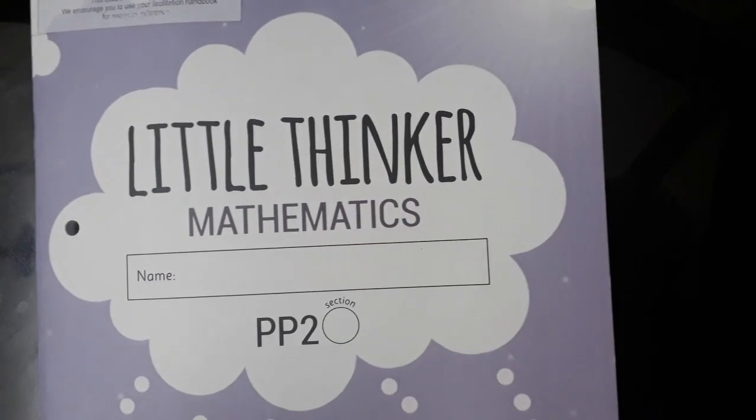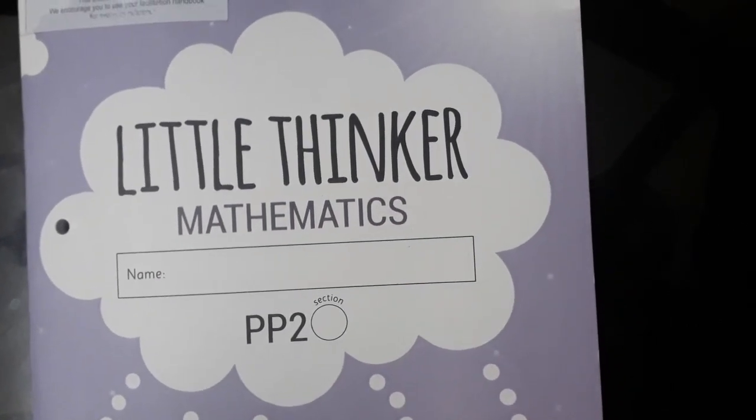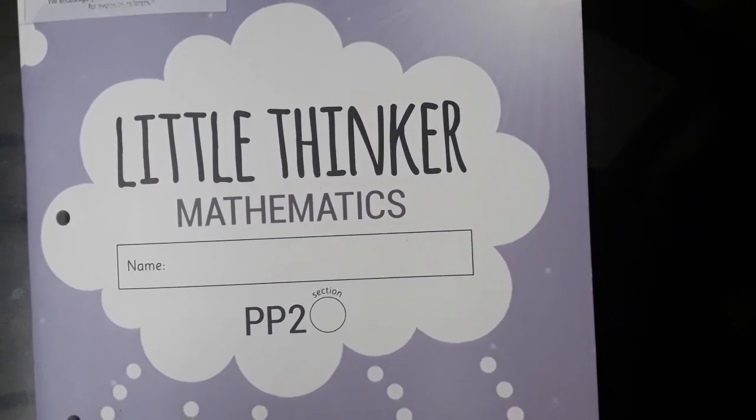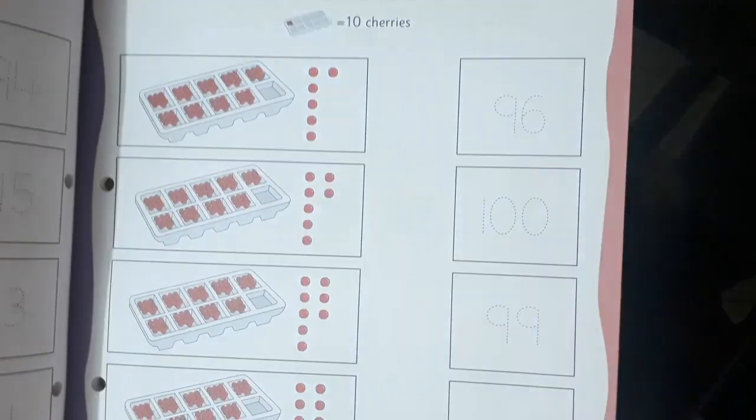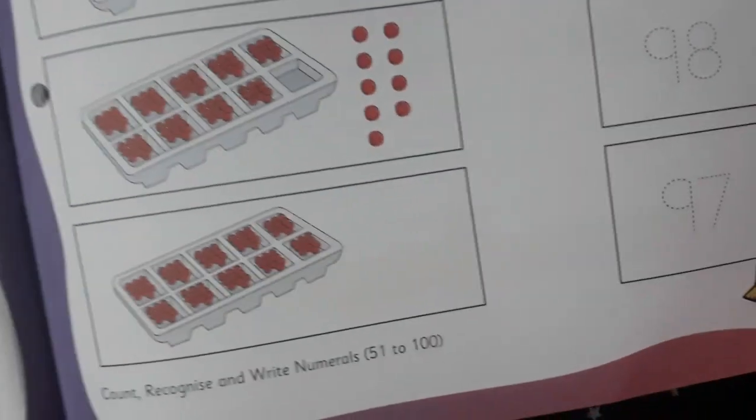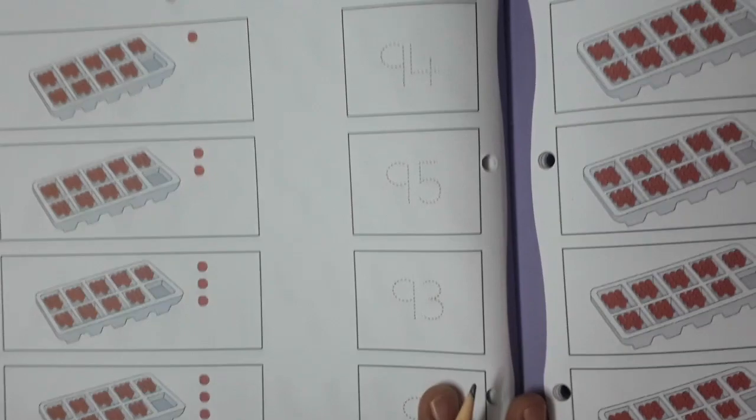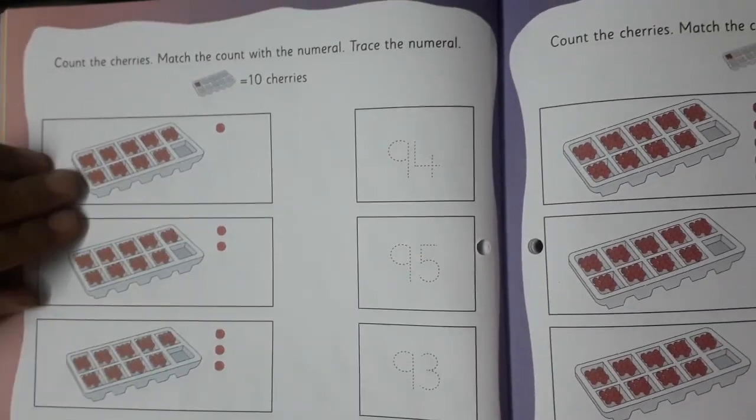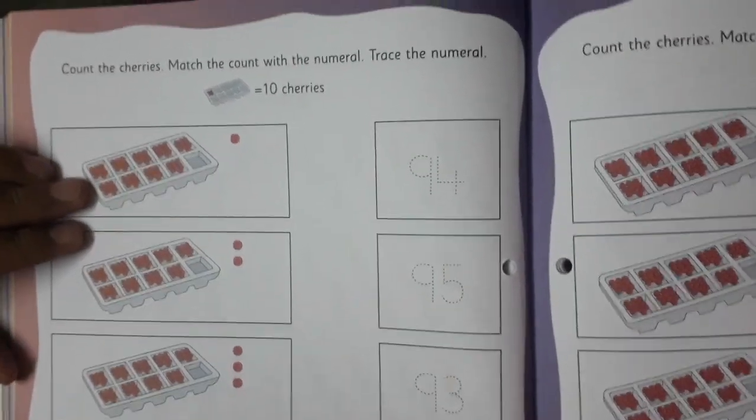Children, in this part of the video we are going to complete two pages from Little Thinker Mathematics. Please open page number 42 and 43. Now here, as you already know, count the cherries. You have to count the cherries and match the count with the numeral. First of all, we are going to trace the numeral.